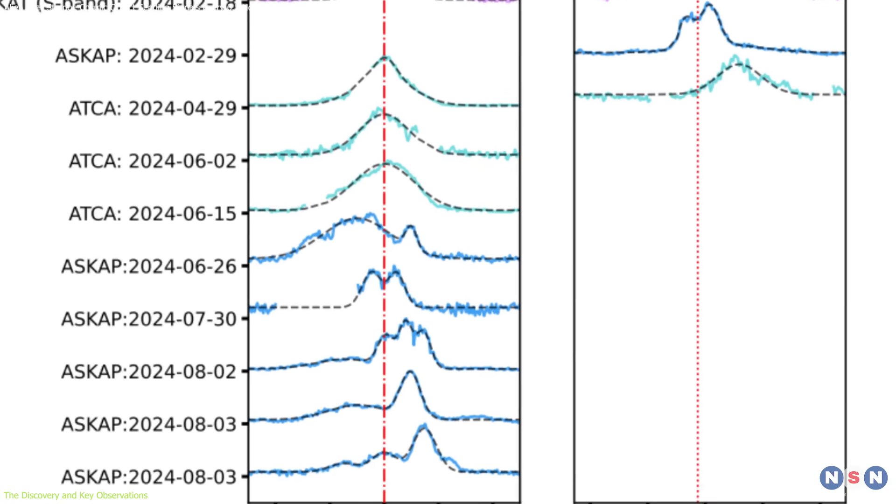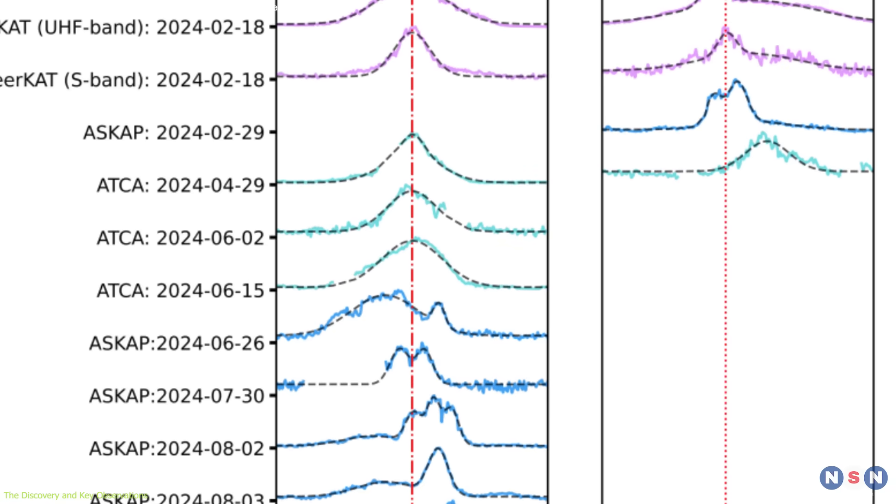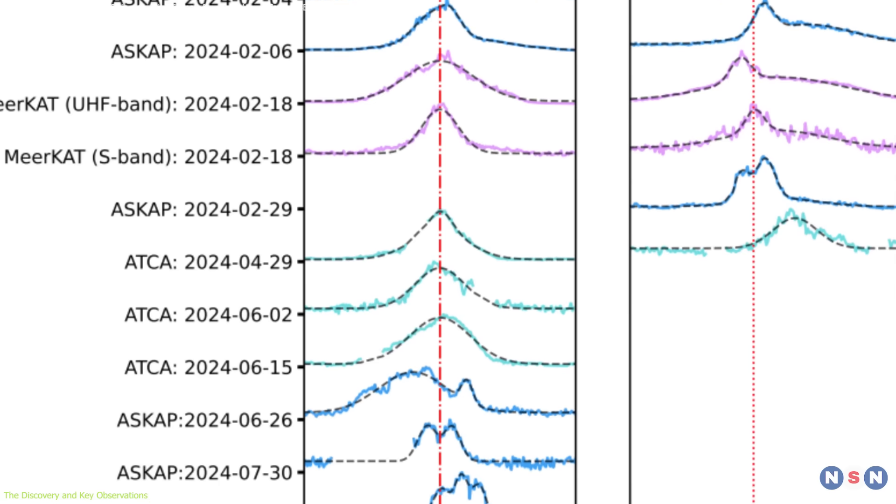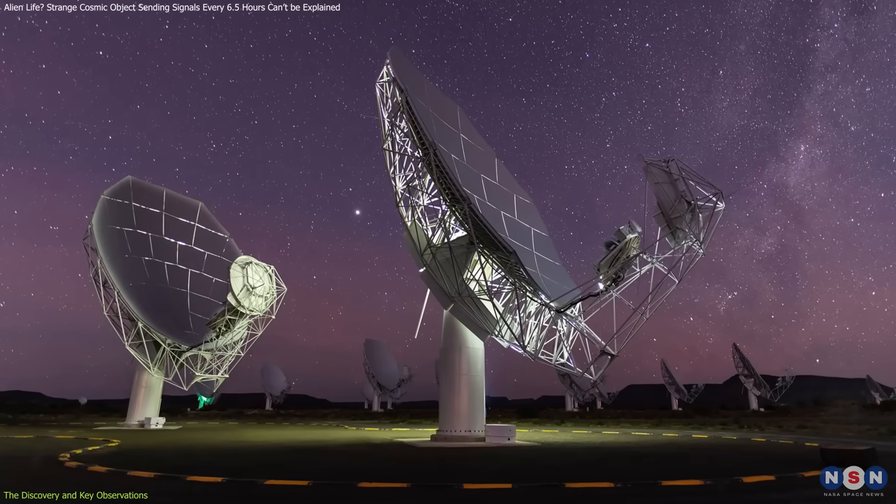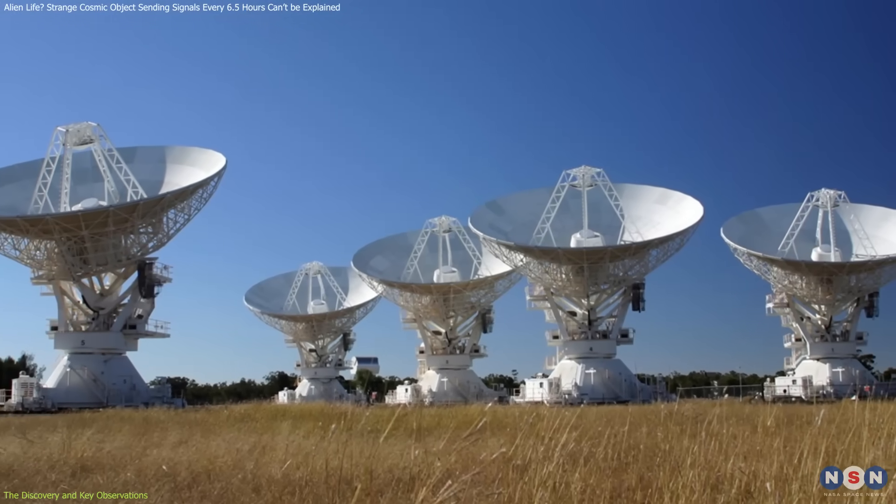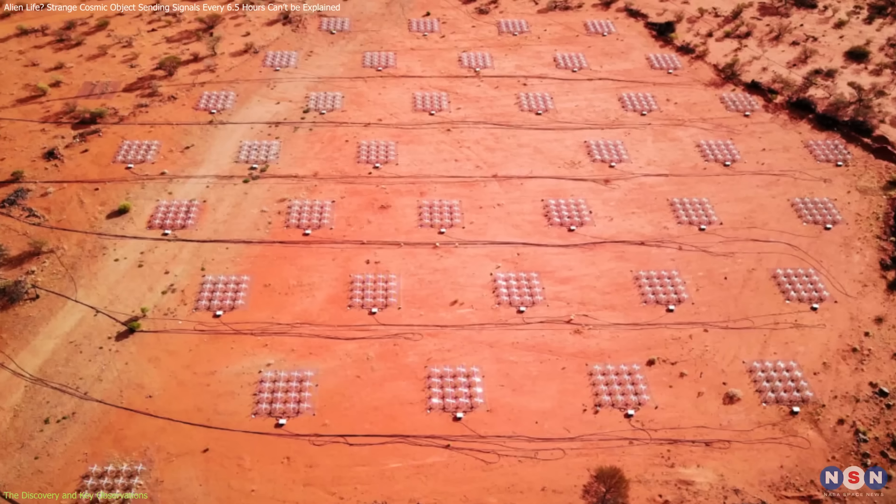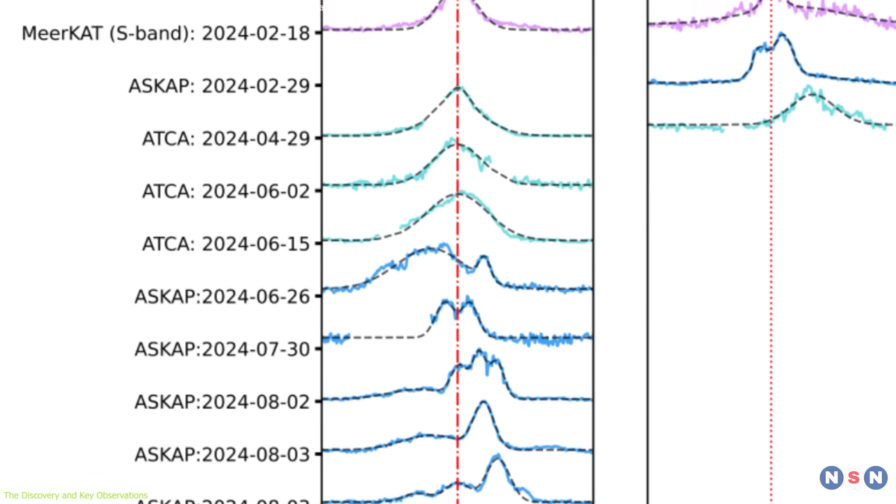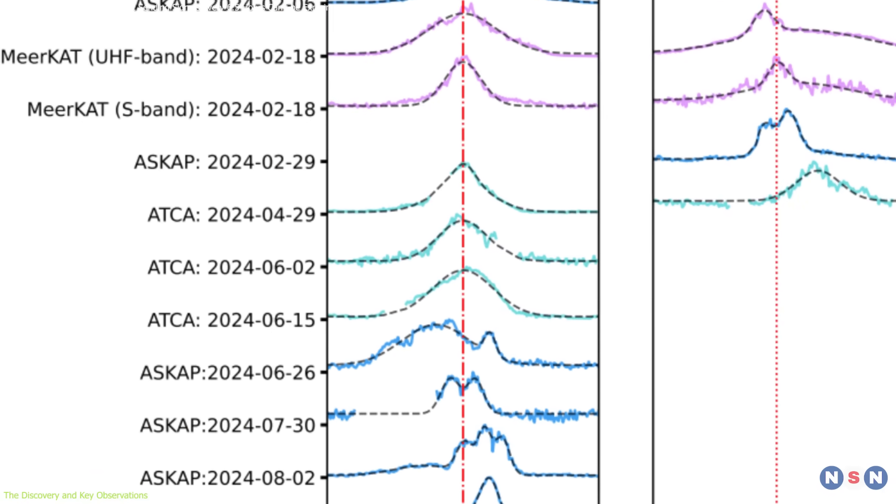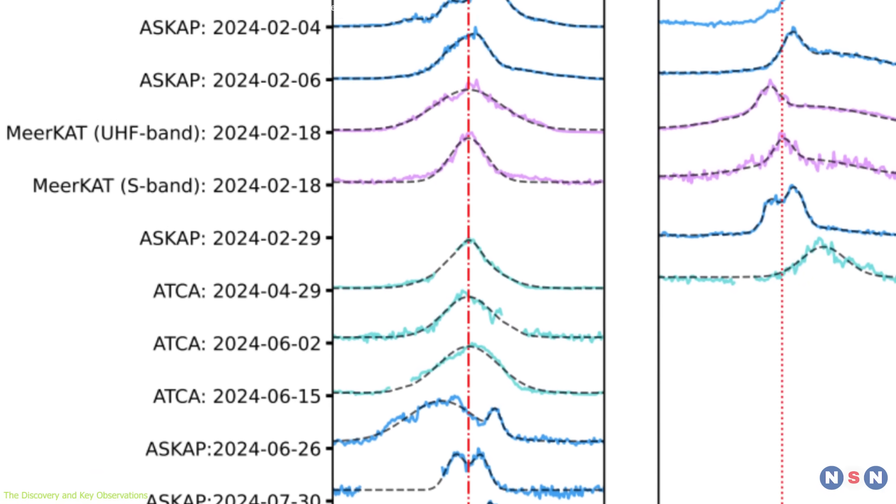Following the initial detection, astronomers conducted follow-up observations using multiple radio telescopes worldwide, including Meerkat in South Africa, CSIRO's Australia Telescope Compact Array, and the Murchison Wide Field Array. Each of these telescopes confirmed that this object emitted periodic pulses with an extremely slow rotation rate, far beyond what was expected for an active neutron star.